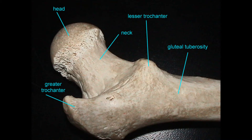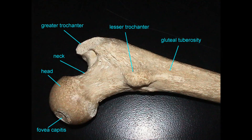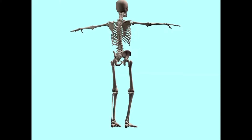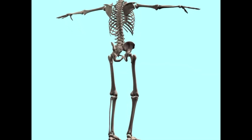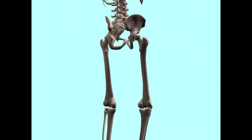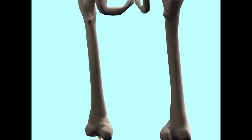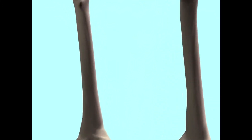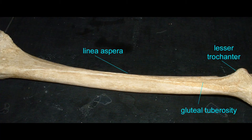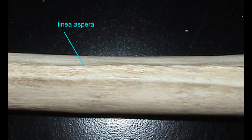Distal to the trochanters is a rough surface known as the gluteal tuberosity. The linea aspera is the narrow ridge which runs along the posterior length of the femur.